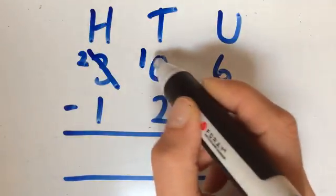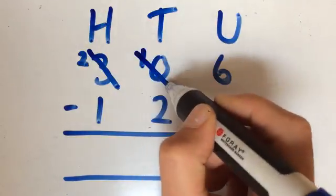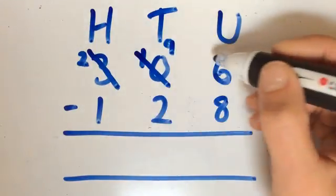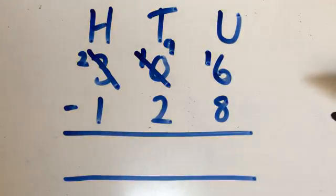In this case, it's a 10 that we're scoring out, and we're writing a 9 in the place. And the extra 10 then follows into the units column.